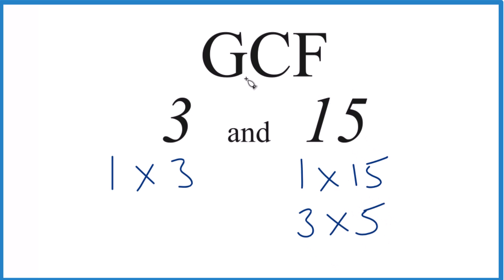So let's see what's in common here. We have 1, 1 goes into 3 and 15 evenly, and then we have 3. It looks like 3, that's the greatest factor that is common to 3 and 15.